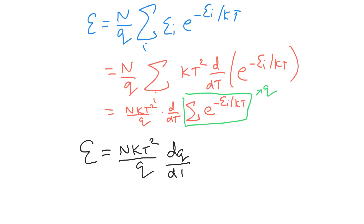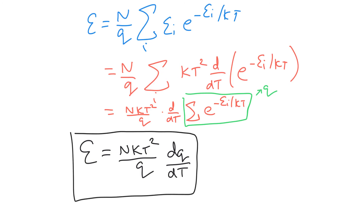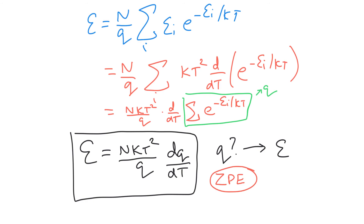We recognize that the sum of e to the minus E_i over kT is none other than the partition function q. So the total energy simplifies beautifully: U = NkT² over q times dq/dT. This is really nice — if you know the partition function, all you have to do to find the total energy is take the first derivative with respect to temperature and multiply by NkT²/q. That's why it's just like the wave function in quantum mechanics: if you know q, you can extract the total energy.